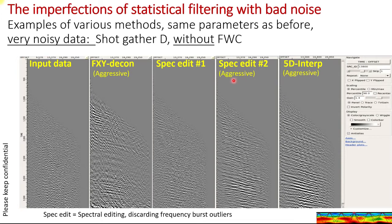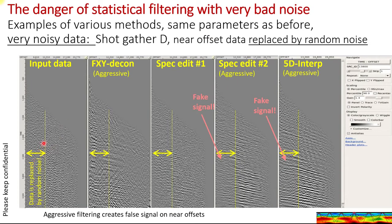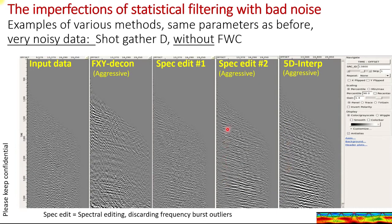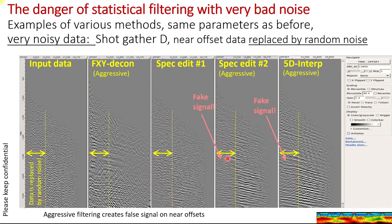Both of the last two methods actually work in five dimensions. Now let's try something else: in this offset range, the data is replaced by pure random noise. These two aggressive statistical methods will create signal — they try to extract signal wherever they can. And they've done that. It's purely fake signal. It might make you suspicious of some of the near offsets in this bad data filtering. This shows you the power, the imperfection, and the danger of statistical filtering.